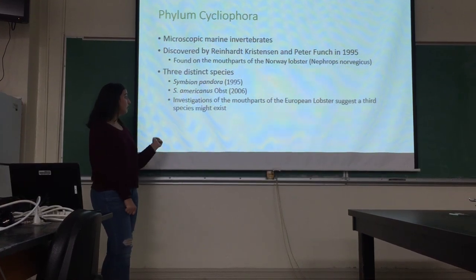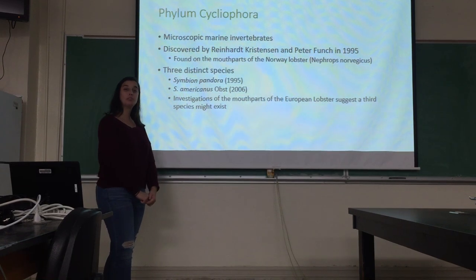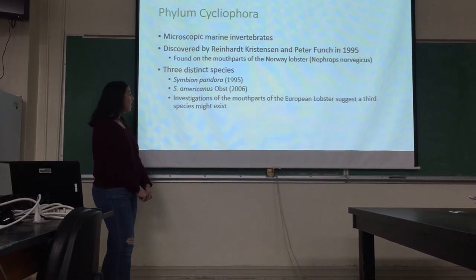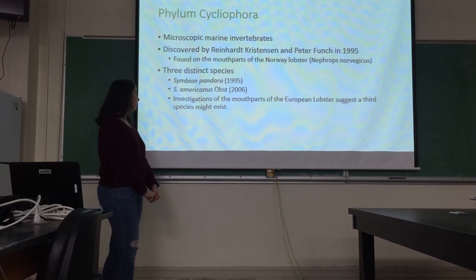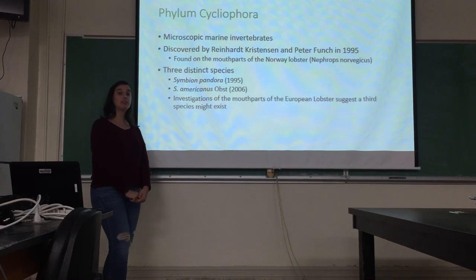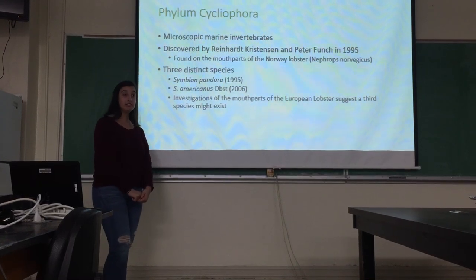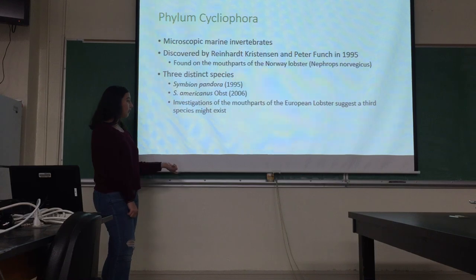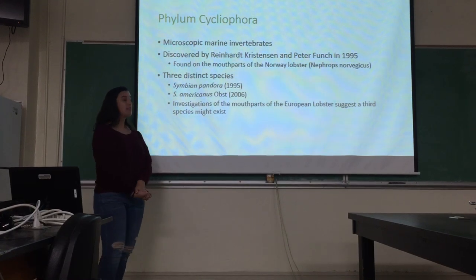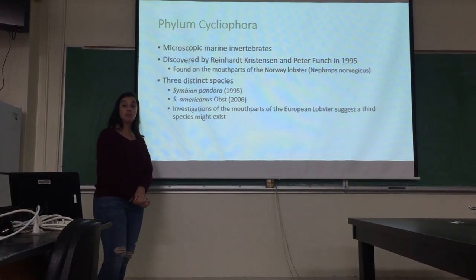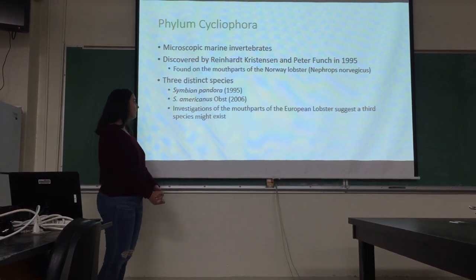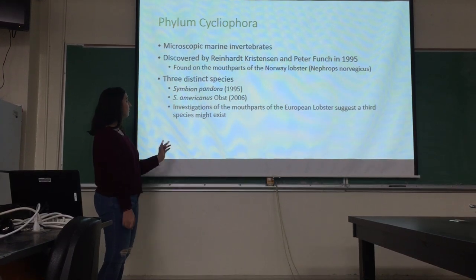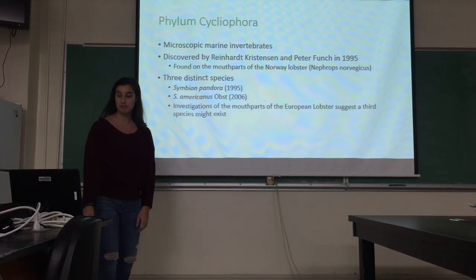The first species is Symbion pandora, discovered in 1995 in the Norway lobster. The second species is Symbion americanus, which was discovered in 2006 in the American lobster. And there is a possible third species found in the mouth part of the European lobster, but they are still doing investigations to see if this is a third species.